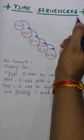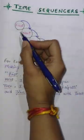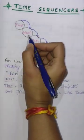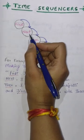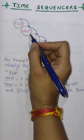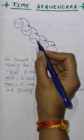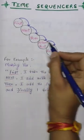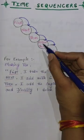Time sequences: first, next, then, and after that are used in sequence. Finally is used at the end.